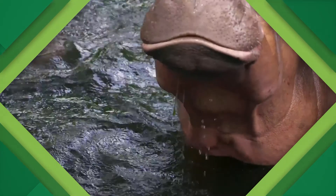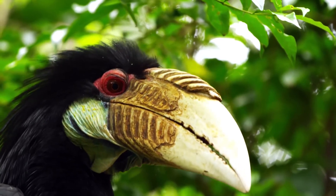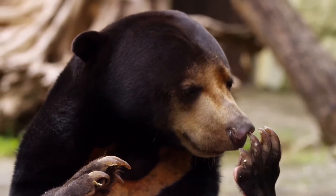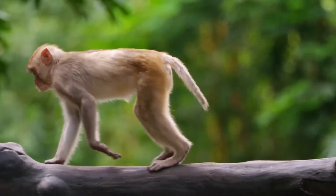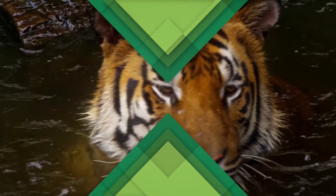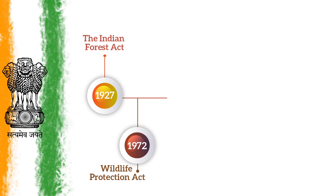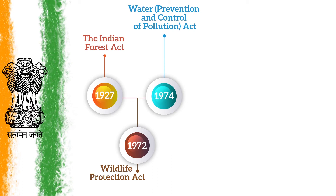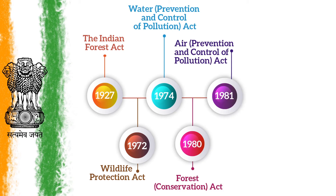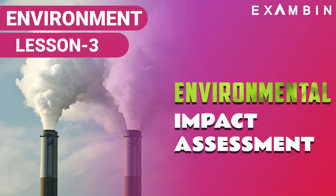Eco-sensitive zones are notified around protected areas such as national parks and wildlife sanctuaries. Their objective is to create shock absorbers for protected areas by regulating and managing activities that threaten forest areas — for example, the Western Ghats and the Himalayan region. There are several other environmental laws to protect the environment: Indian Forest Act 1927, Wildlife Protection Act 1972, Water Prevention and Control of Pollution Act 1974, Forest Conservation Act 1980, Air Prevention and Control of Pollution Act 1981, Environment Protection Act 1986, and National Green Tribunal Act 2010. The Environment Impact Assessment is also a major step taken by the government to reduce the effects of climate change.